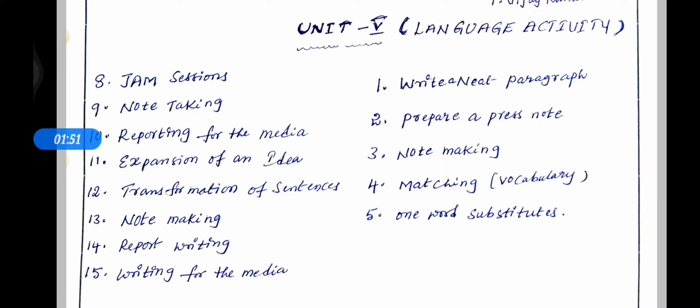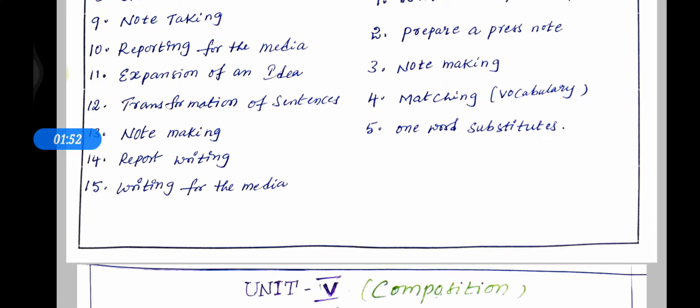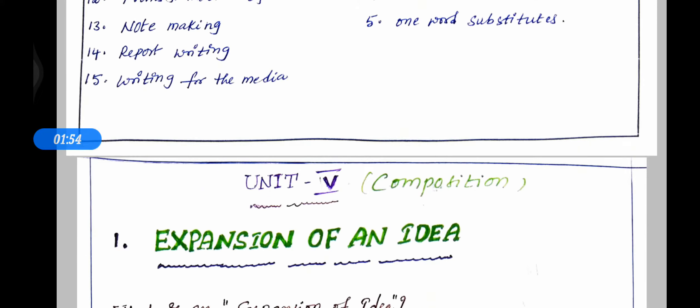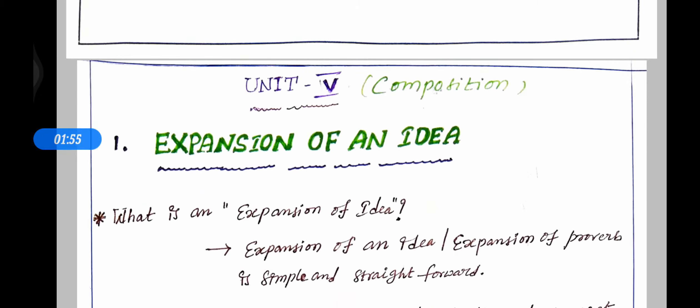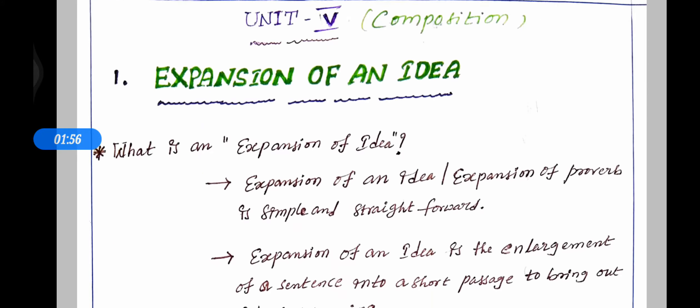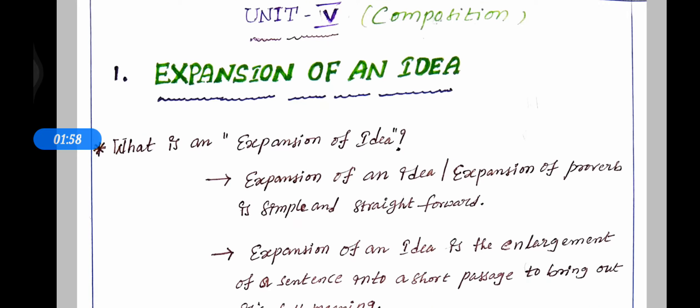These are five topics. Five into five is equal to twenty-five marks in the grammar part. Coming to the first topic of unit fifth — composition.